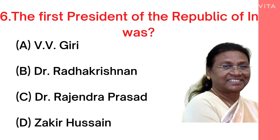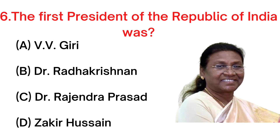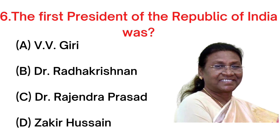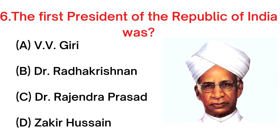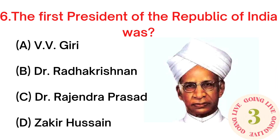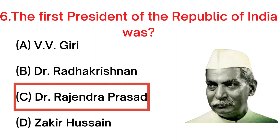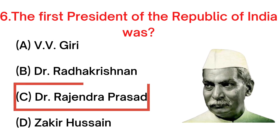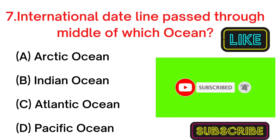Your next question: the first President of the Republic of India was A. V.V. Giri, B. Dr. Radhakrishnan, C. Dr. Rajendra Prasad, D. Zakir Hussain. Your answer is C. Dr. Rajendra Prasad.